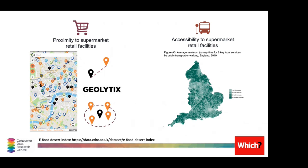The first three of our domains actually come from the E-Food Desert Index, developed in 2019 by researchers at CDRC to capture access to groceries and retail. A food desert is when people aren't able to access food from a supermarket, and this index was created to encompass both physical and online access. To capture proximity to supermarket retail facilities, we used supermarket location point data from Geolytics — made openly available — and calculated both the distance from each postcode to the nearest store and the number of stores within one kilometre, then averaged that up for those small area neighbourhoods.